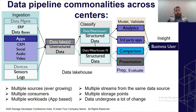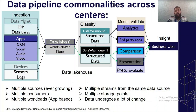The data pipeline typically has an ingestion phase where applications create data and store it in a data lake as unstructured data. The application could be an ERP, database, CRM, social media, video platform, or a device generating sensor data or log data — everything stored in data lakes in unstructured format. Based on how the data will be used, it gets classified. There can be N number of classifications based on the model you want to generate.